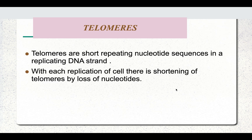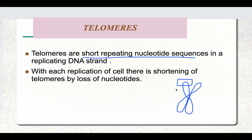What are telomeres? Telomeres are short repeating nucleotide sequences present at the ends of the chromosome. They do not code for anything. They are just there so that proper replication of the chromosome can take place and there is no loss in genetic information. With each replication of the cell, there is shortening of the telomeres by loss of nucleotides.